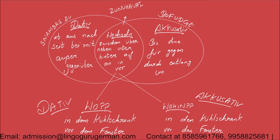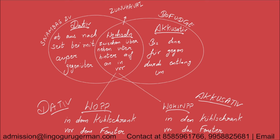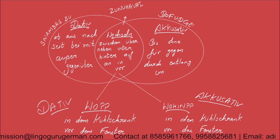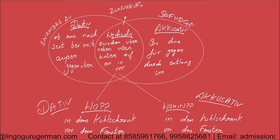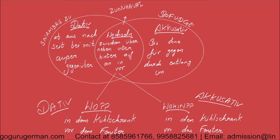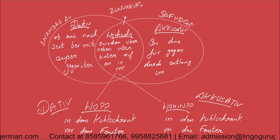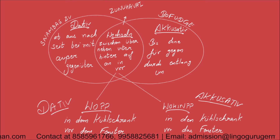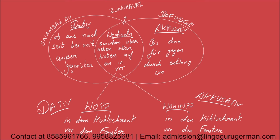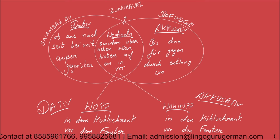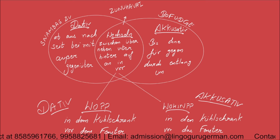Two important things to keep in mind: 'wo' means where something is — a stationary position with no change of movement. 'Wohin' means where you are going to place something. If you are putting something somewhere, it is accusative. For example, 'im Kühlschrank' — something is in the refrigerator and there is no change of position, so it is dative.